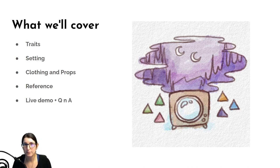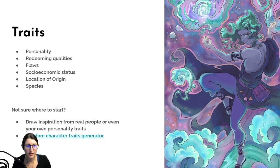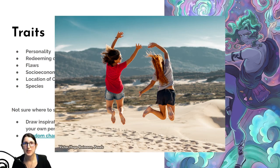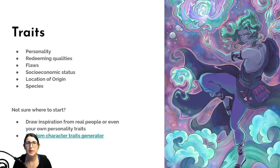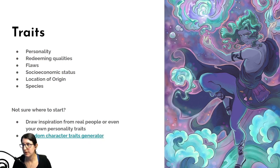There are a few things I want you to know before we get into the demo. We're gonna cover things like character traits, setting, clothing and props, and reference gathering. When you're designing a character, you'll want to think about what kind of traits that character has - their personality. Are they shy? Extroverted? Do they take advantage of others or are they very caring? What are their redeeming qualities - the good things people will like about them? And on the flip side, what are their flaws? You can't have a perfect character; flaws are really important for story development and make your character feel more real.